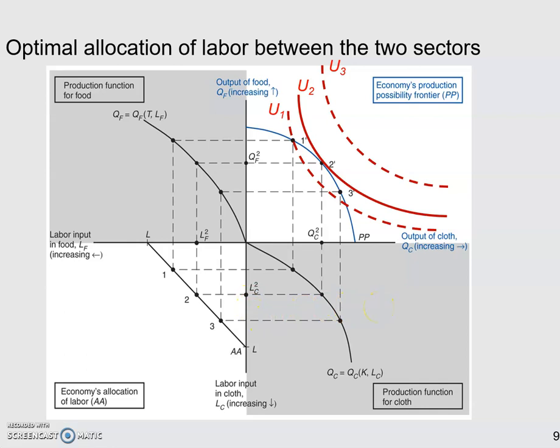Now, here, we already find the optimal allocation of labor between the two sectors. But remember, we need the indifference curves to get here, to find the optimal solution.